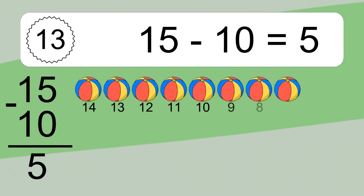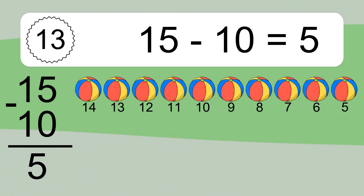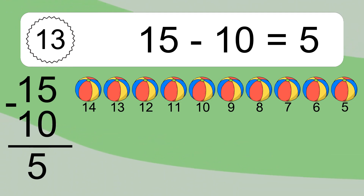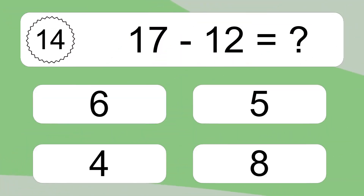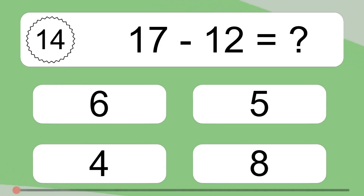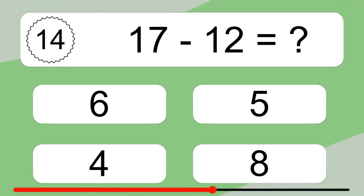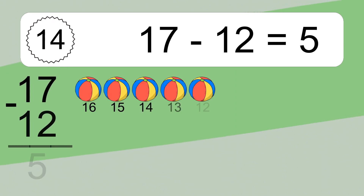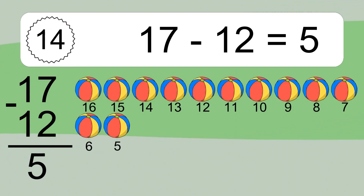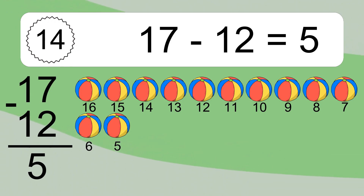15 minus 10 equals 5. Let's count it: 14, 13, 12, 11, 10, 9, 8, 7, 6, 5. 17 minus 12 equals what? 17 minus 12 equals 5. Let's count it: 16, 15, 14, 13, 12, 11, 10, 9, 8, 7, 6, 5.